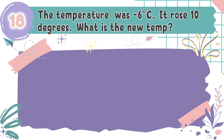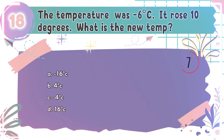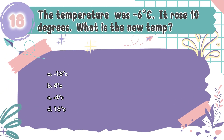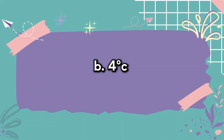Question number 18: The temperature was negative 6 degrees Celsius. It rose 10 degrees. What is the new temperature? The choices are A. Negative 16 degrees Celsius, B. 4 degrees Celsius, C. Negative 4 degrees Celsius, D. 16 degrees Celsius. The correct answer is B. 4 degrees Celsius. Starting at negative 6 and rising 10 degrees is the same as negative 6 plus 10, which equals 4.